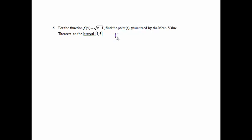The Mean Value Theorem says that somewhere the derivative will equal the slope. The first thing we're going to do is find the derivative. We know f equals (x − 1) to the 1/2 power.